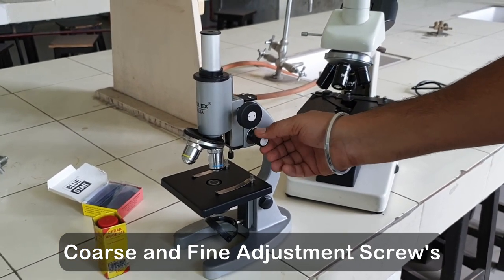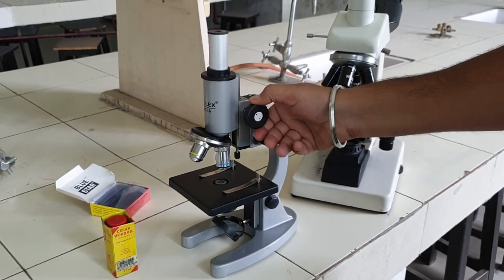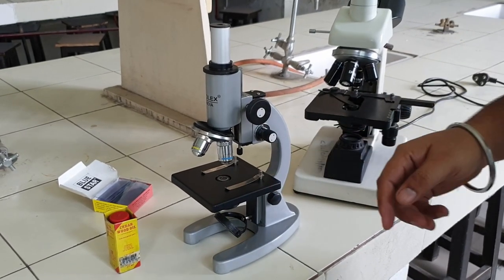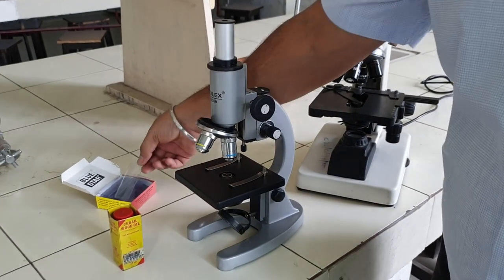This is a condenser lens. This light is focused on the object.